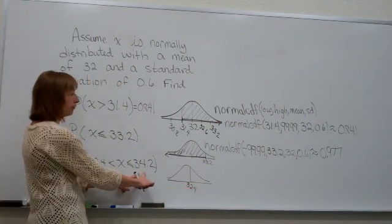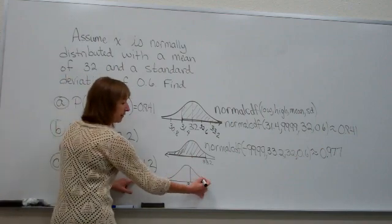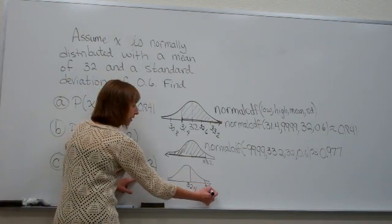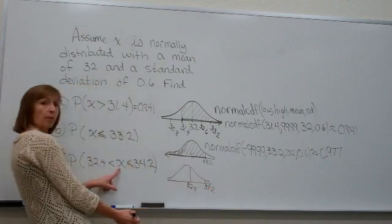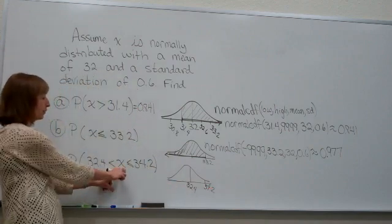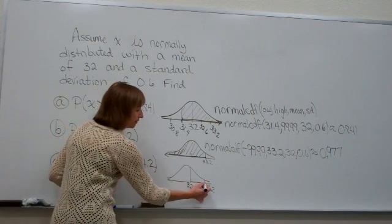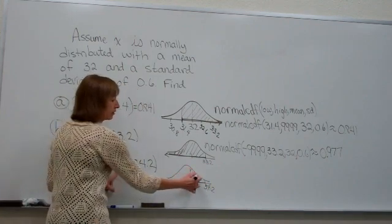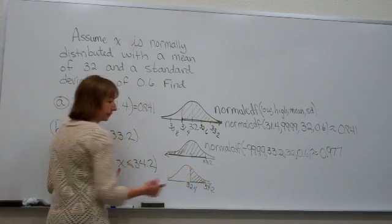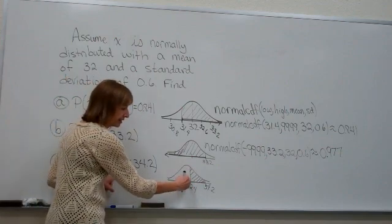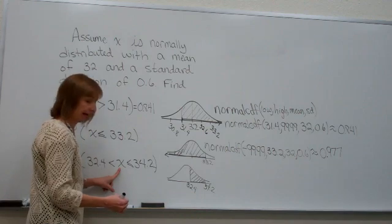And I want the probability that a value picked at random would be between those values. So between these values and shade. So I'm anticipating a value that's smaller than 0.5 because it's less than half the curve that's shaded for that.